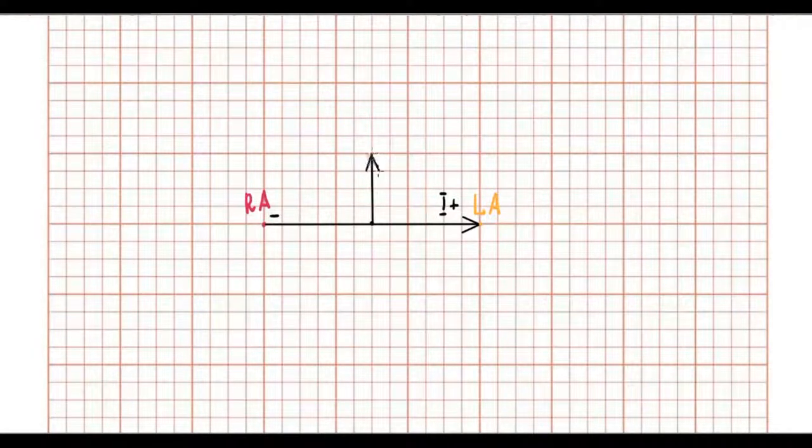So if the mean QRS axis is oriented at right angles to any lead, a biphasic complex is recorded in that lead.